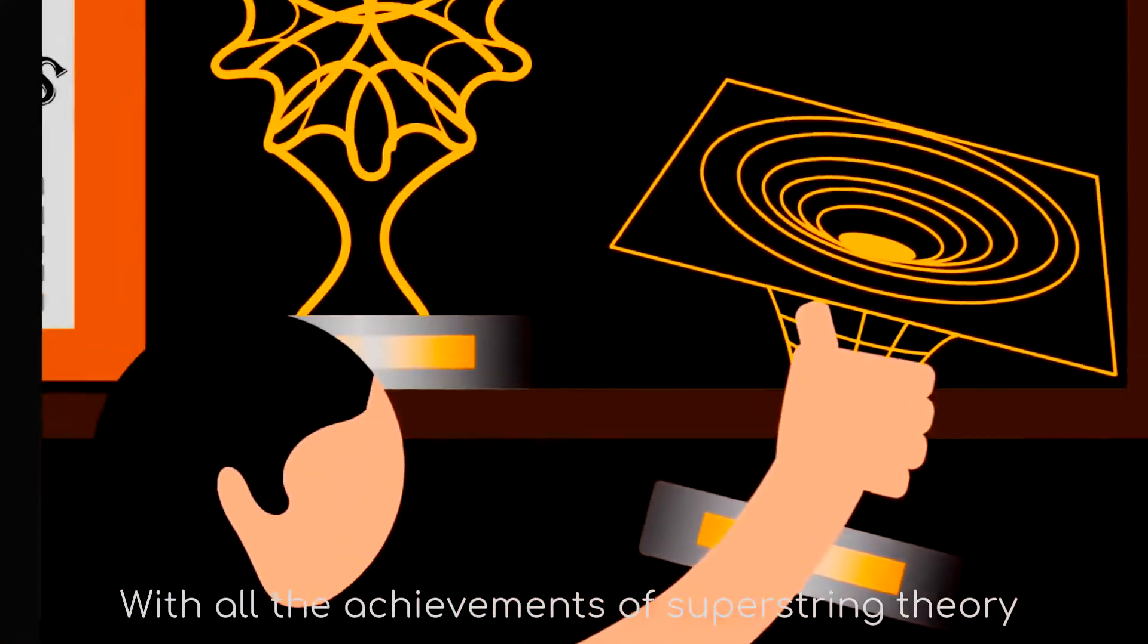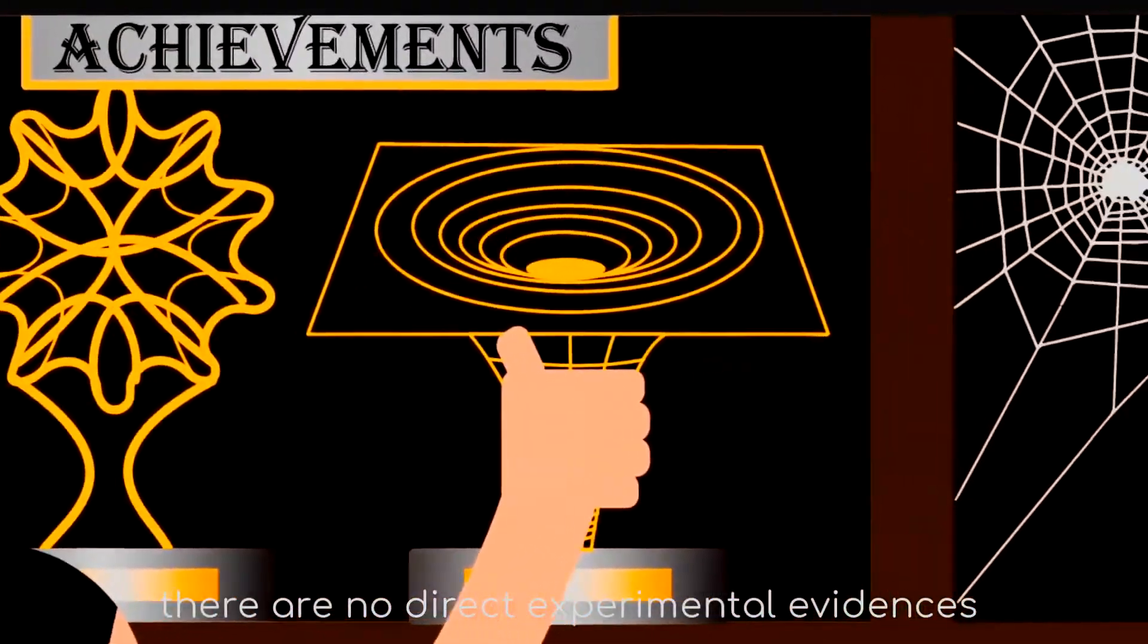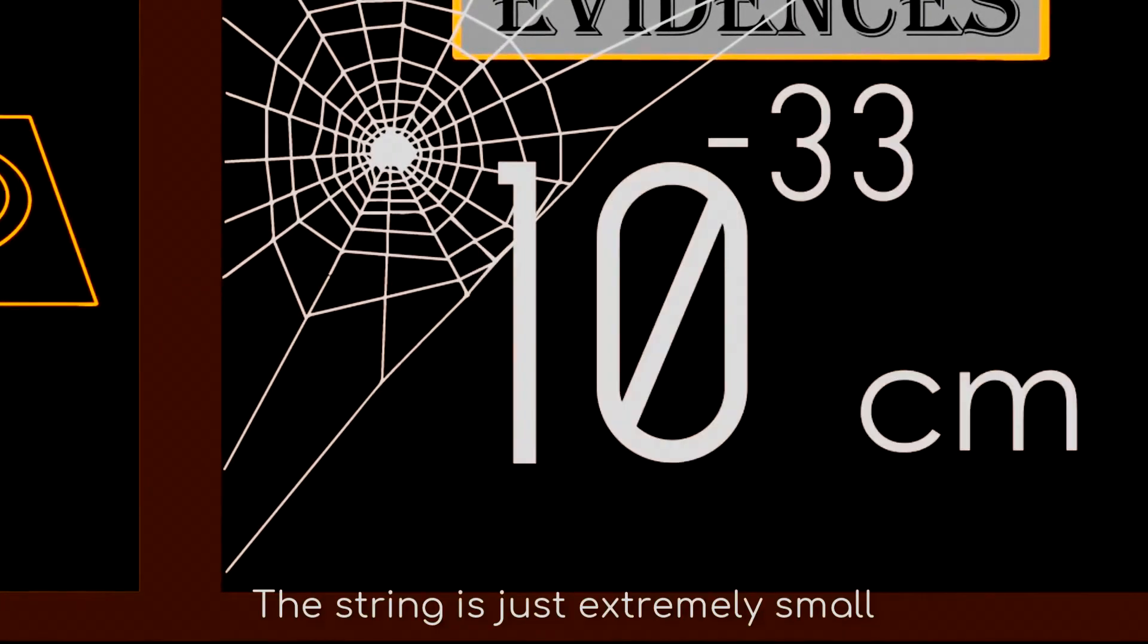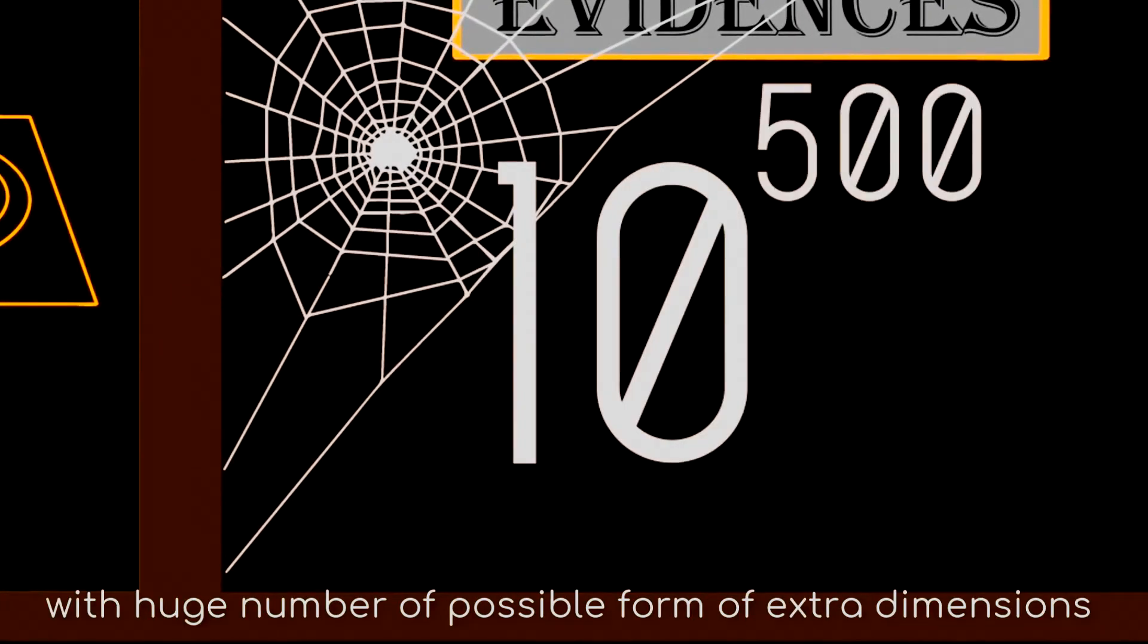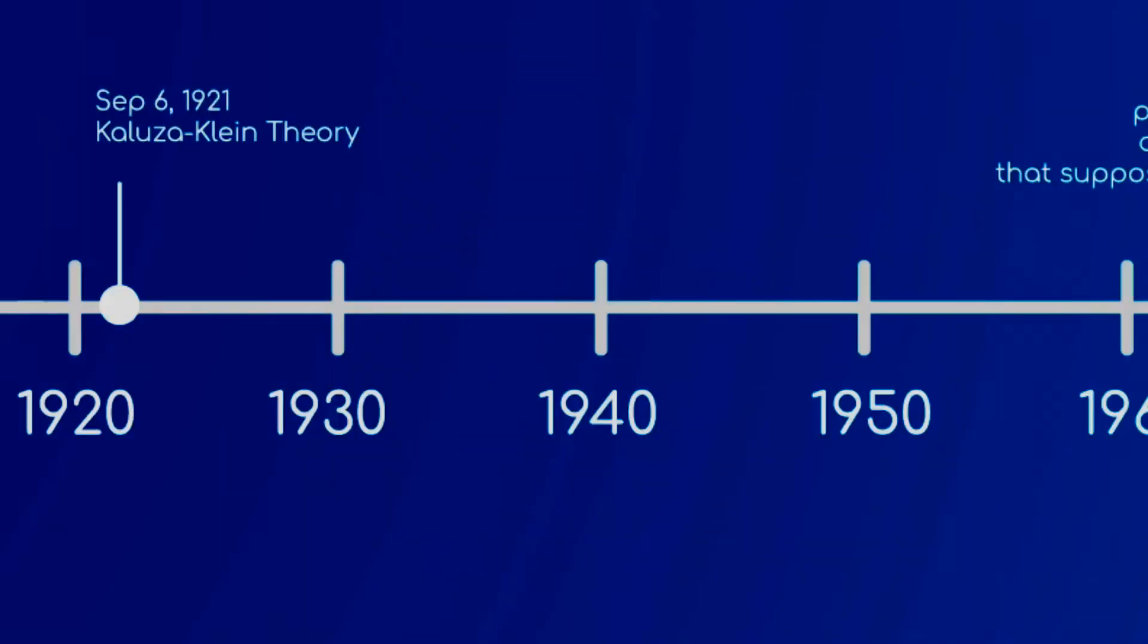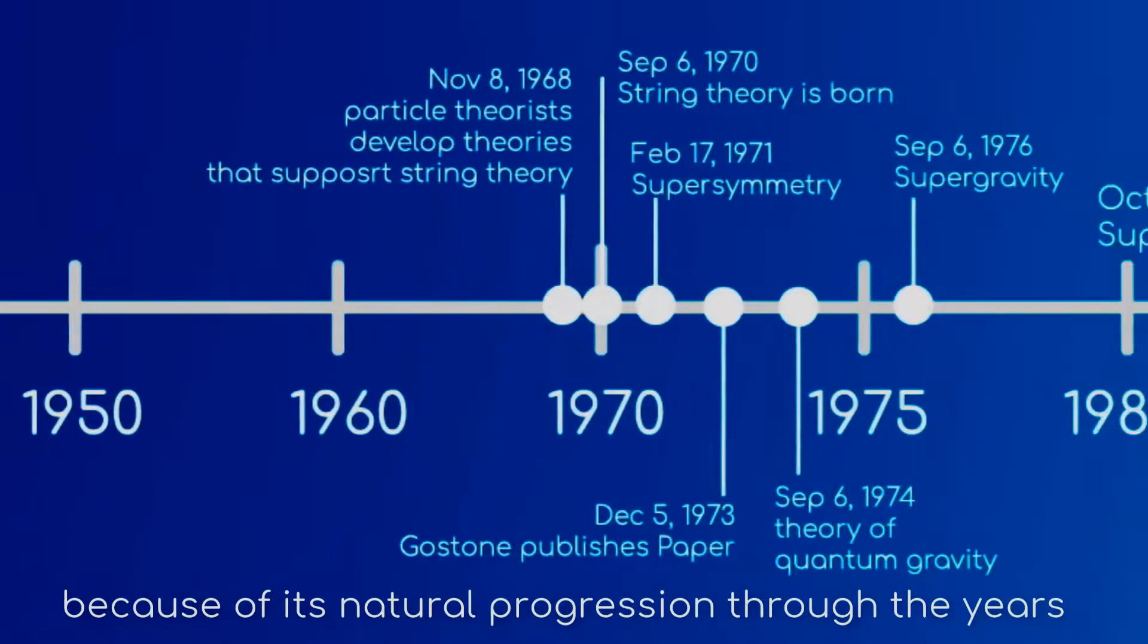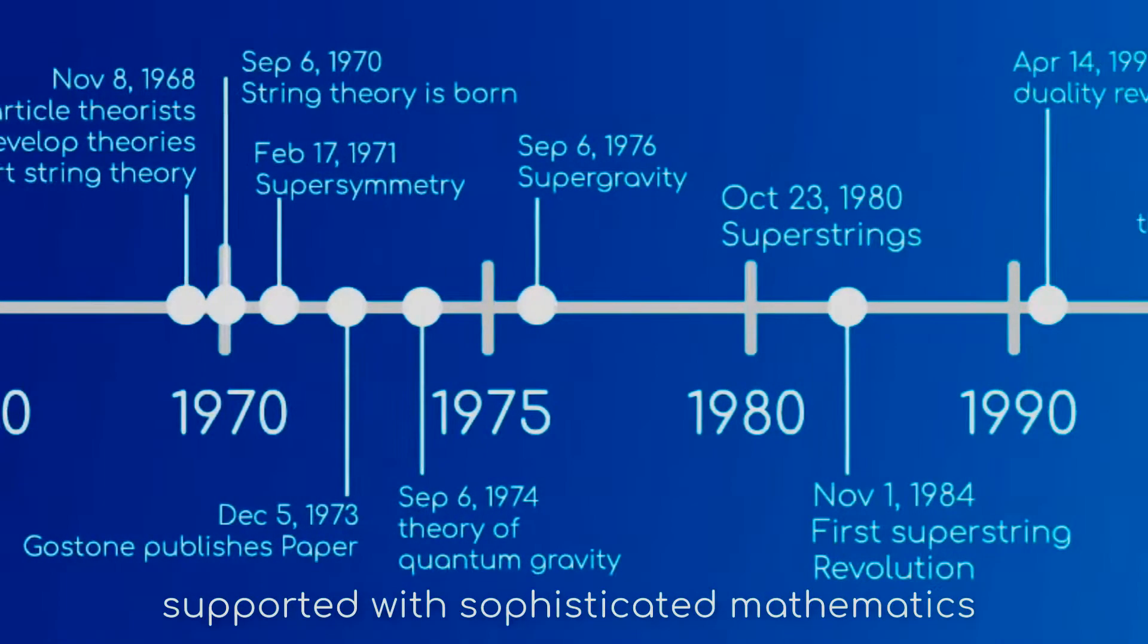With all of these achievements of superstring theory, there are no direct experimental evidences to prove that it is true. The string is just extremely small with huge number of possible forms of extra dimensions. However, scientific community recognizes it because of its natural progression through the years, supported with sophisticated mathematics.